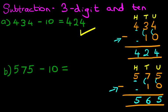575 minus 10 is 565. That is correct. So that is how we do subtraction of three-digit numbers and the number 10 using the vertical format.